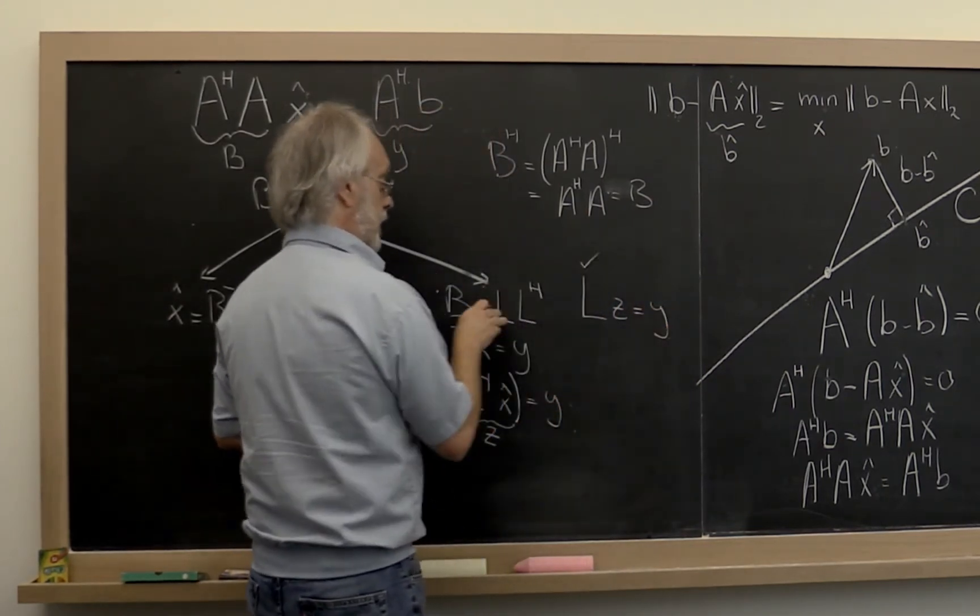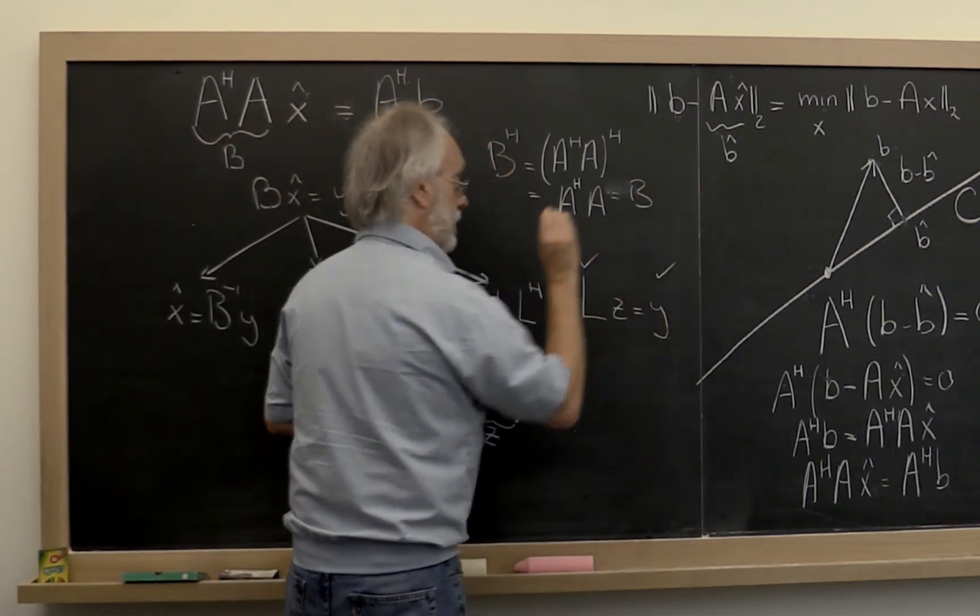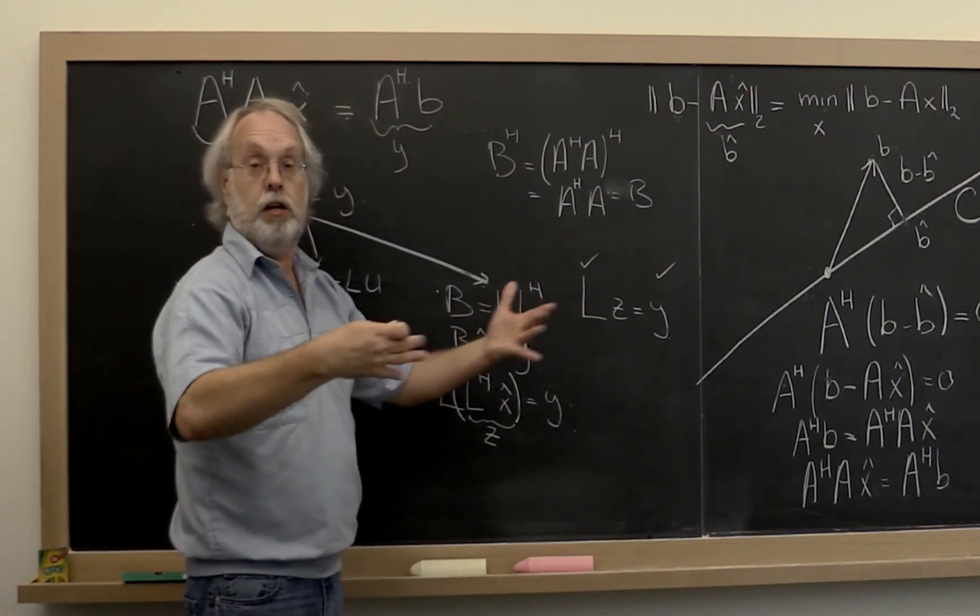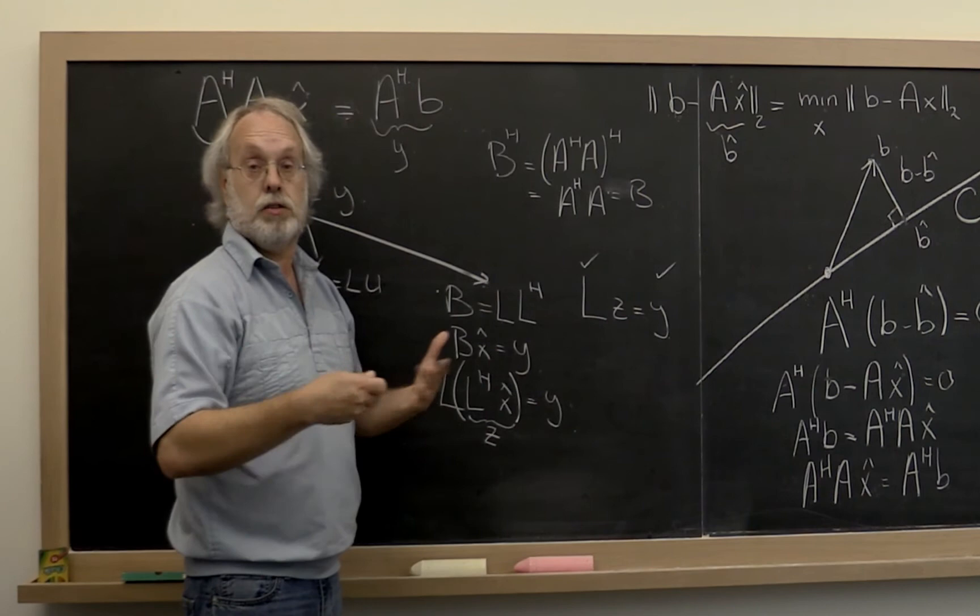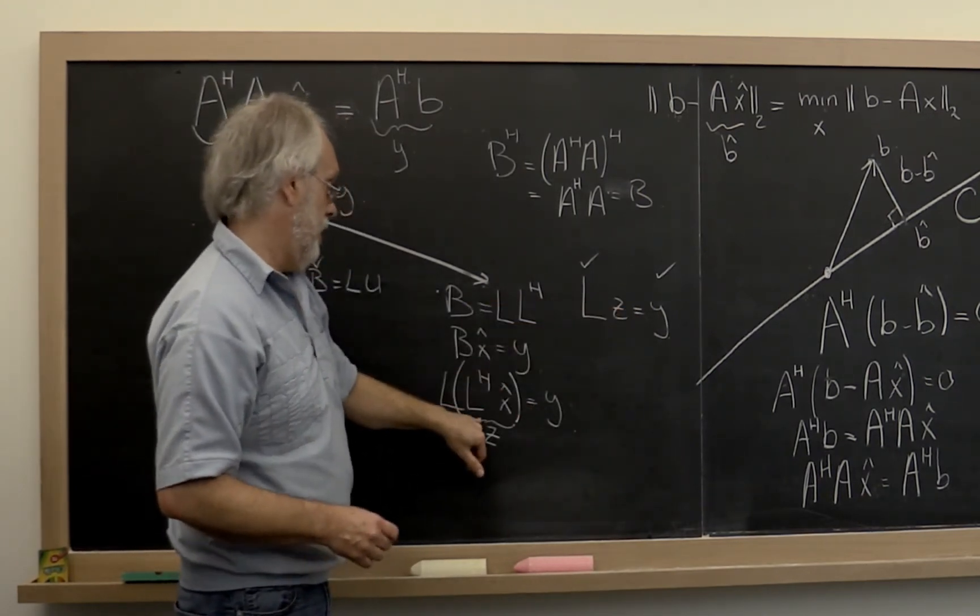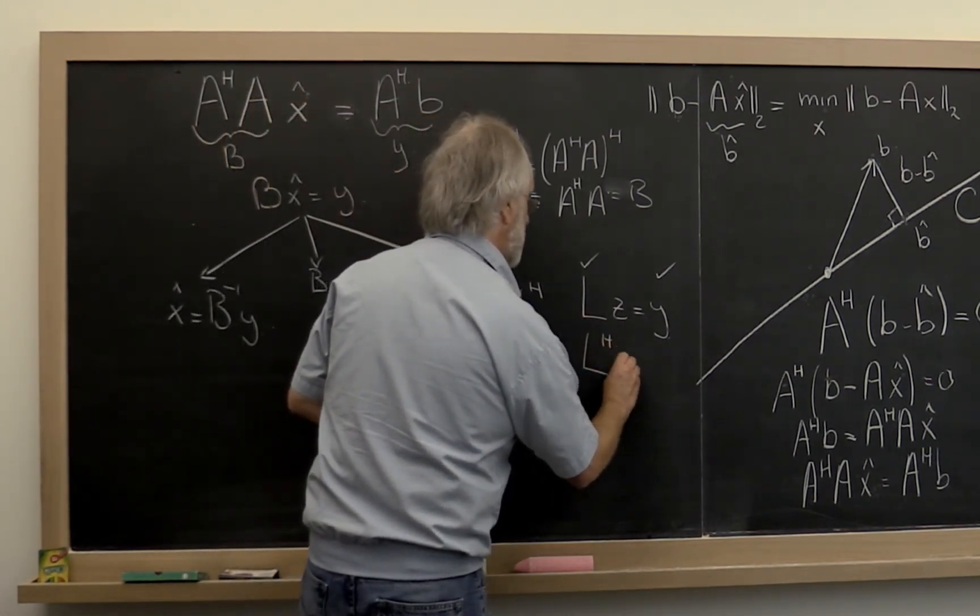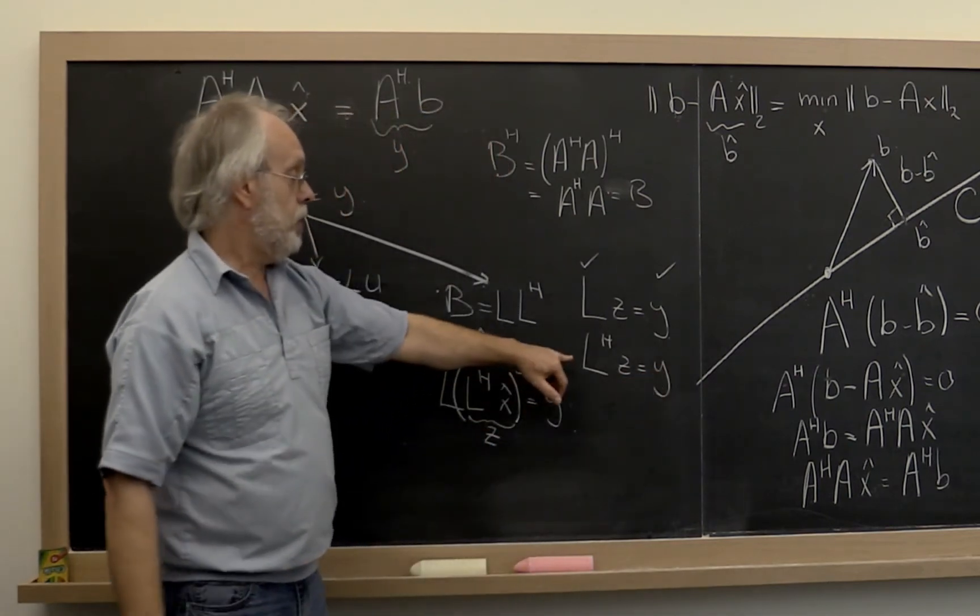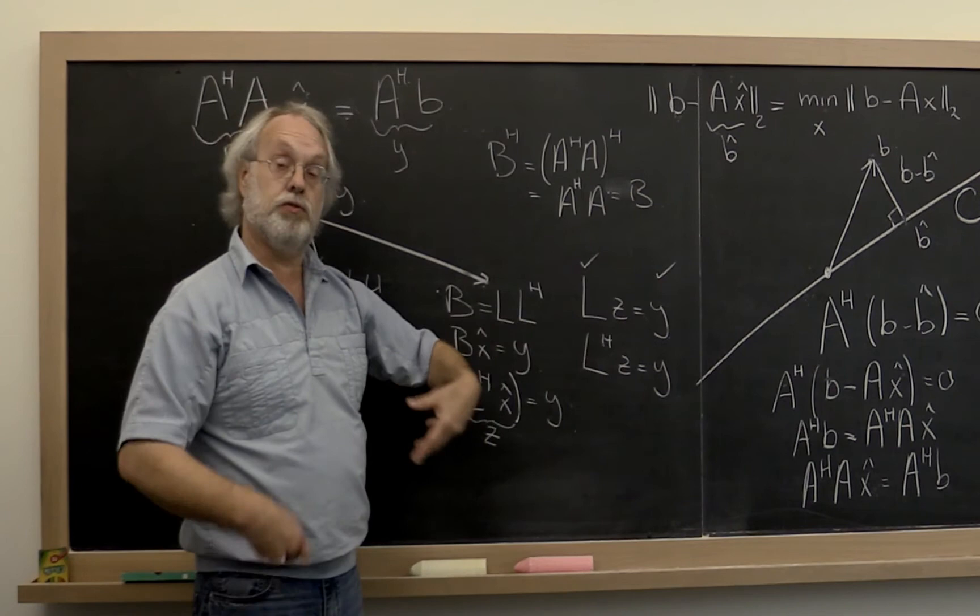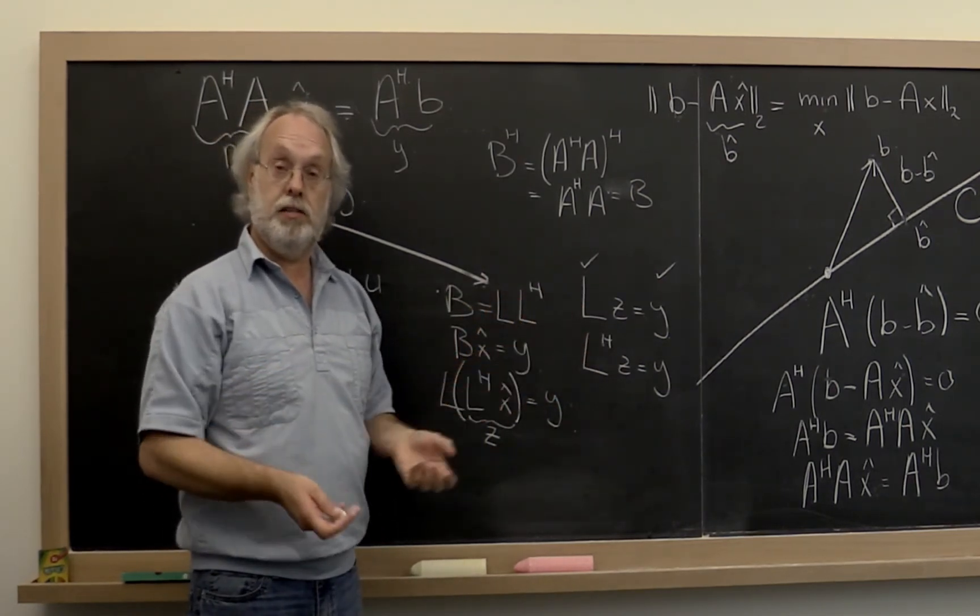But you know what L is if you've computed the Cholesky factorization. And you know what Y is. And therefore you can now solve with this lower triangular matrix. That's solving a lower triangular system. That's relatively easy. And then once you have your vector Z, you remember that L Hermitian transpose times Z is equal to Y. But notice that the lower triangular matrix, when you compute its Hermitian transpose, gives you an upper triangular matrix. And solving with an upper triangular matrix is relatively easy as well.